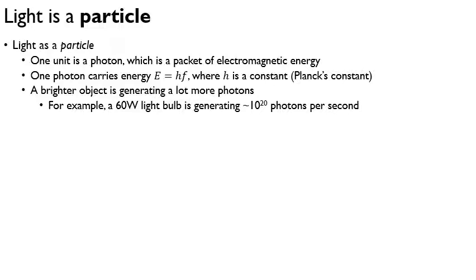A brighter object is generating many more photons. For instance, if we have a 60-watt light bulb, we can figure out the average frequency of the light it generates and calculate how many photons are needed to achieve that energy rate. For a 60-watt light bulb, that winds up being something like 10²⁰ photons per second — an incredibly huge number, but true.